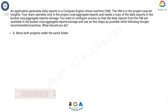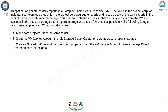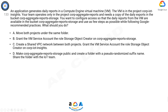A. Move both projects under the same folder. B. Grant the VM service account the role Storage Object Creator on Corp Aggregate Report Storage. C. Create a shared VPC network between both projects. Grant the VM service account the role Storage Object Creator on Corp IoT Insights. D/E. Make Corp Aggregate Report Storage public and create a folder with a pseudo-randomized suffix name. Share the folder with the IoT team.